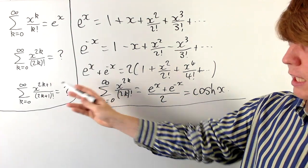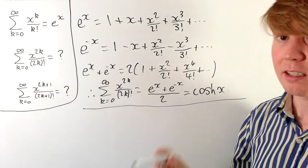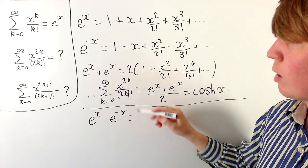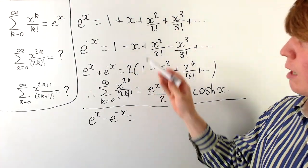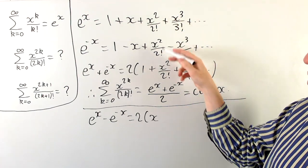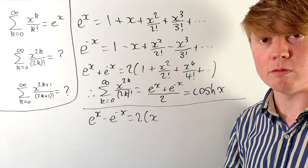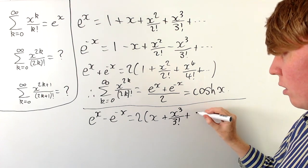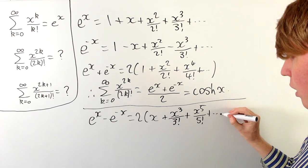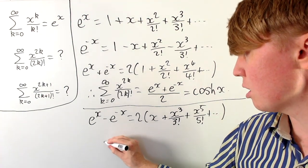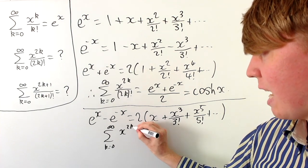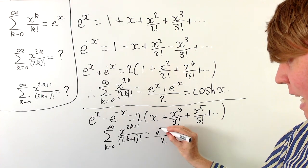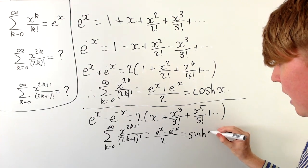We can use a similar argument for the sum of all odd terms. Instead of adding e to the x and e to the negative x, we subtract: e to the x minus e to the negative x. The constant terms cancel to 0, while x minus negative x gives two lots of x. All even powers cancel out, and x cubed over 3 factorial minus negative x cubed over 3 factorial gives two lots of x cubed over 3 factorial, then two lots of x to the 5 over 5 factorial, and so on. Dividing by 2, the sum from k equals 0 to infinity of x to the 2k plus 1 over (2k+1) factorial equals one half times (e to the x minus e to the negative x), which is hyperbolic sine of x.